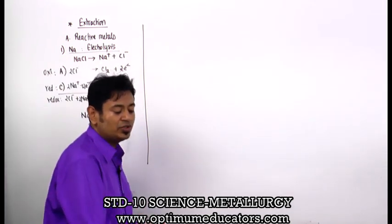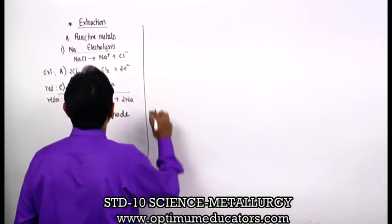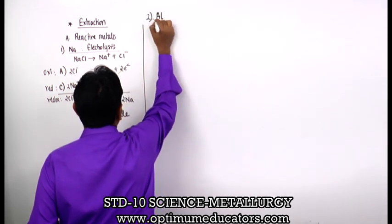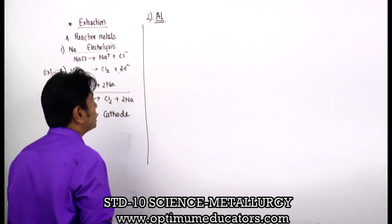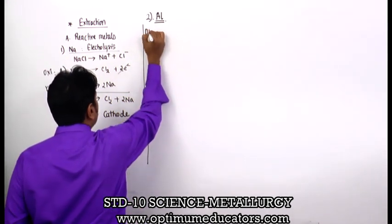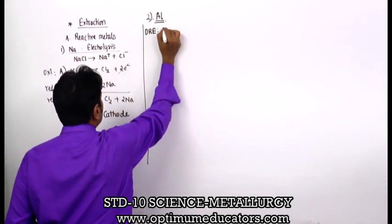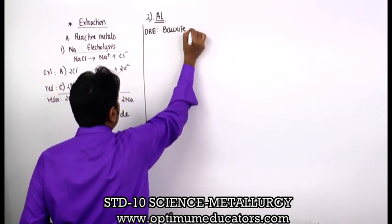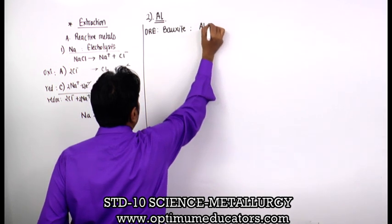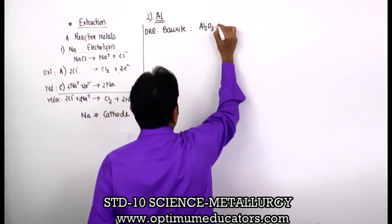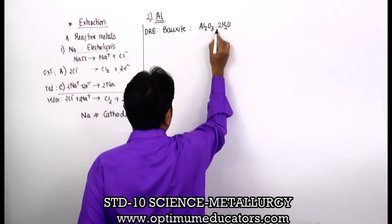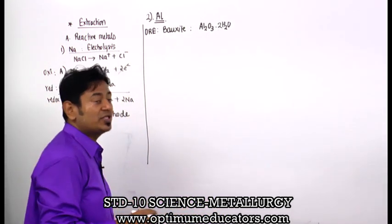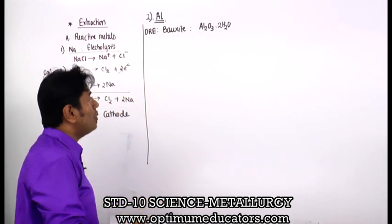Now let us go to the extraction of aluminium, one of the most major topics of this chapter. Its ore is known as bauxite, with formula Al2O3·2H2O (water of crystallization is trapped in the formula). Along with the ore, there are impurities - gang SiO2, Fe2O3 (iron oxide), and TiO2 (titanium oxide).